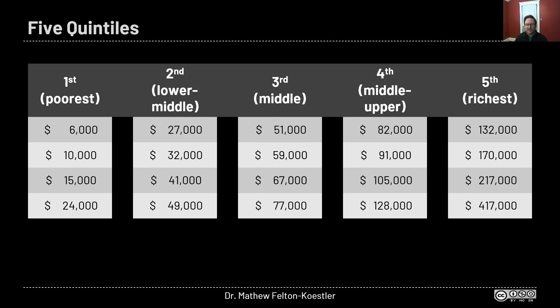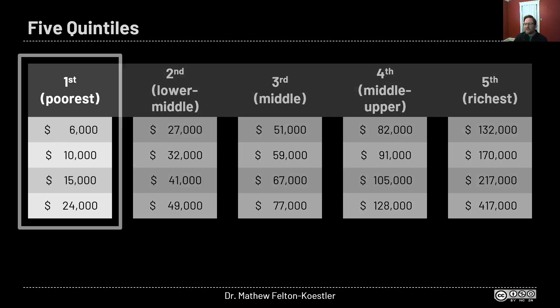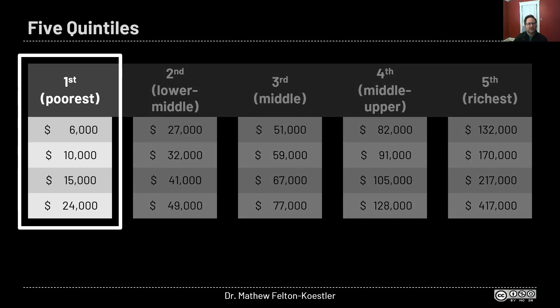I want to emphasize that each household group is the same size. The U.S. Census Bureau purposely takes all the households and breaks them up into five equal-size groups where they each have the same number of households. In our example we said there were four in each quintile, but those are meant to represent all the households in the U.S., so each one is 20% of all U.S. households. We're going to start by focusing just a little bit on the poorest one because the numbers are smaller and easier to work with.